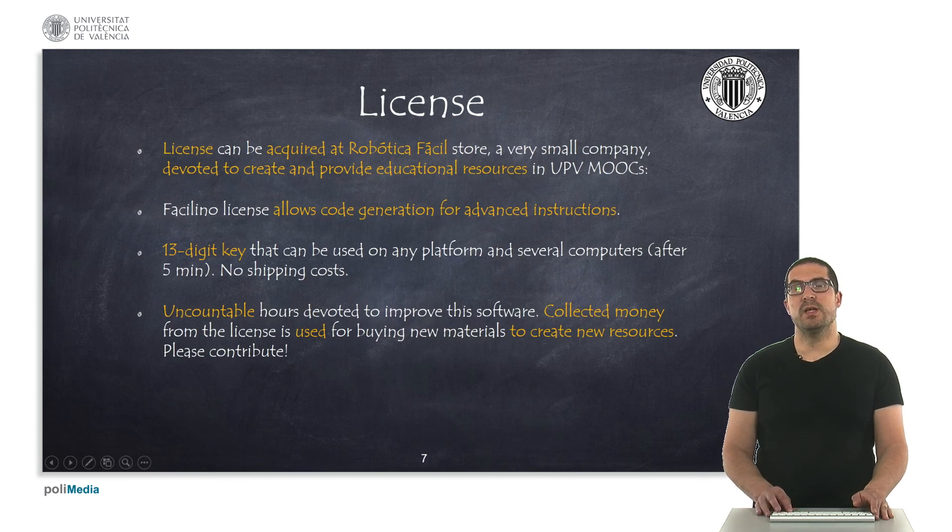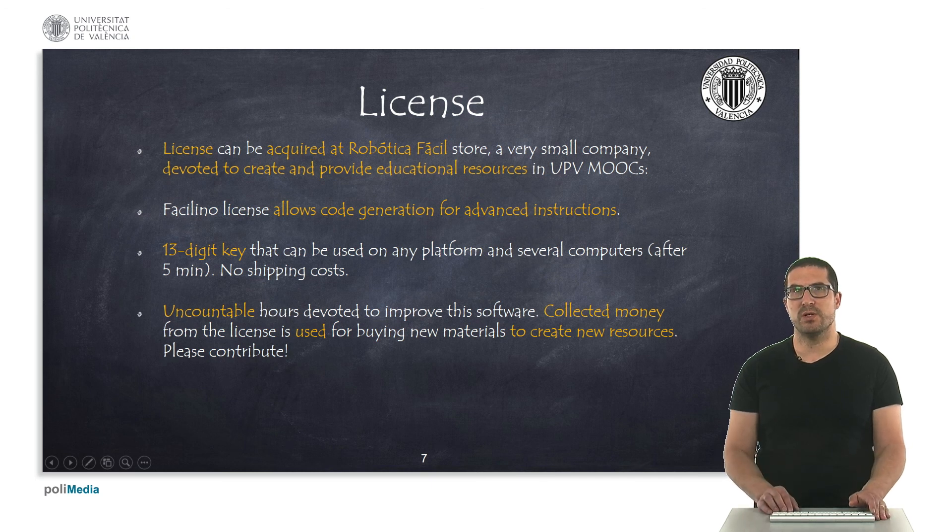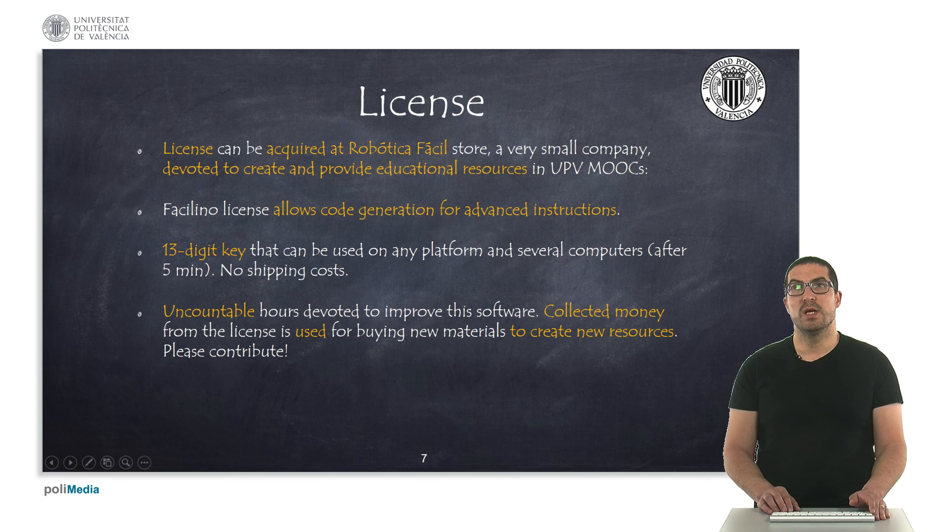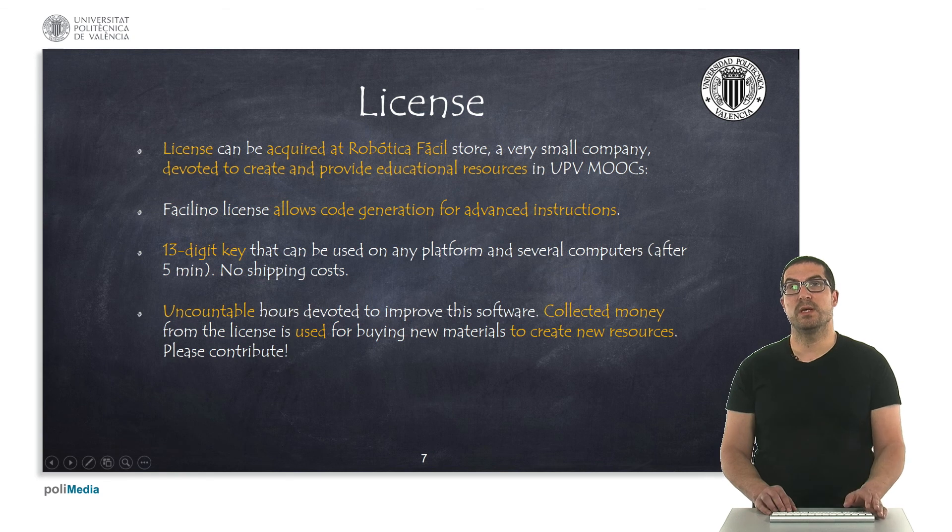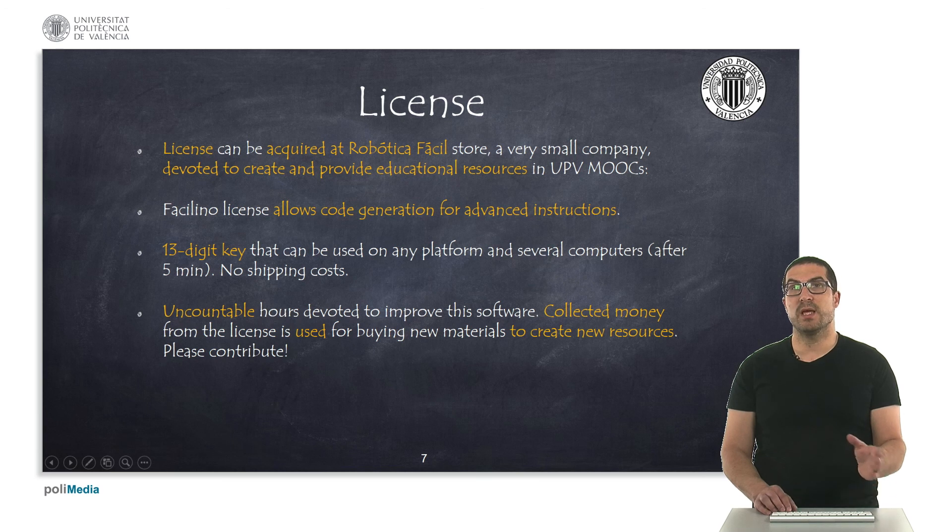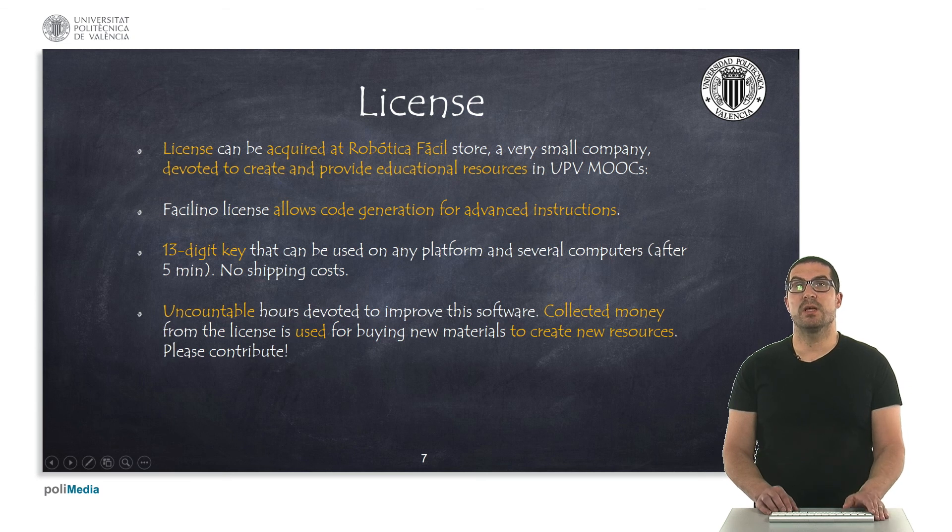The license can be acquired at Robotica Facil Store. This is a small company which has been created for providing educational resources specifically for the UPV MOOCs. The license specifically allows you to generate code for specific and advanced instructions. If you don't have the license, some of the code won't generate. It is a 13-digit key that you can use on any platform, so the license is the same for every platform and you can use it in several computers. You just have to wait five minutes between changing computers. There's no shipping cost in acquiring the license.